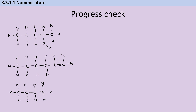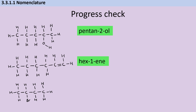Pause the video and double-check that you've understood how to name this next group of molecules. Here we've got a five-carbon chain, that means pent. It's an alcohol so it's going to finish with -anol, and the hydroxy group is on the second carbon from the end, so this is pentan-2-ol. Then we've got an alkene with six carbons, so that's hex and -ene, and the double bond starts from the first carbon on the right-hand side, so it's hex-1-ene. And finally, we've got 2-bromobutane.